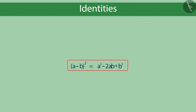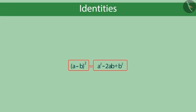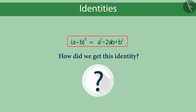Take a look at this equation — this is actually an identity. That means the expression on the left-hand side is equal to the expression on the right-hand side for any value of the variables a and b. But how did we get this identity? Can you find out?